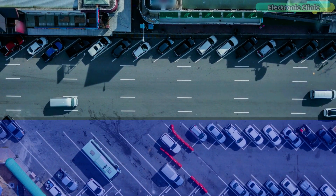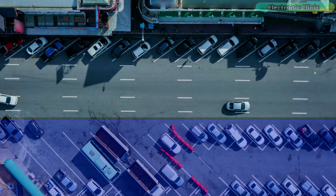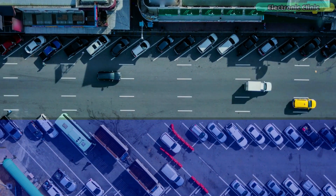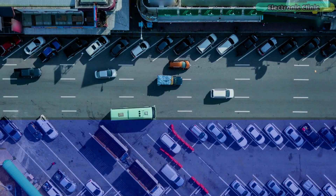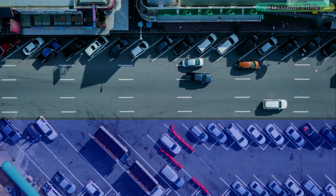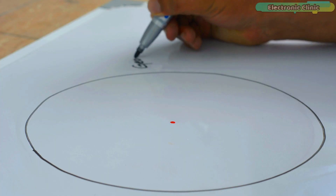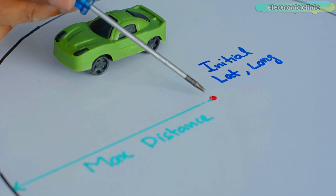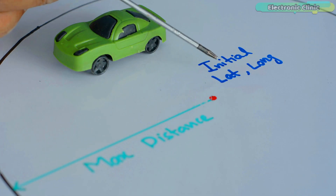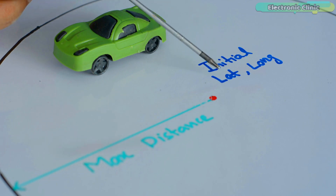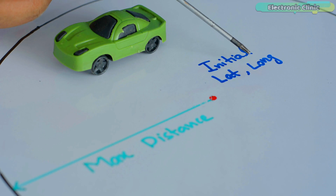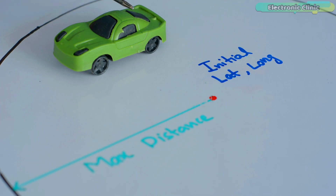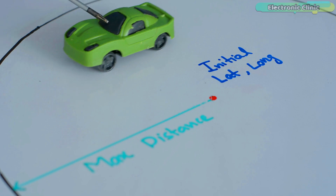A geofence can be of any size or shape. It can be a straight line, a rectangle, a square, a circle, or an irregular shape. A circular type geofence is very easy to implement. We simply define the center of the circle with the initial latitude and longitude values and then compare these with the latitude and longitude values of the GPS module fixed inside a car.